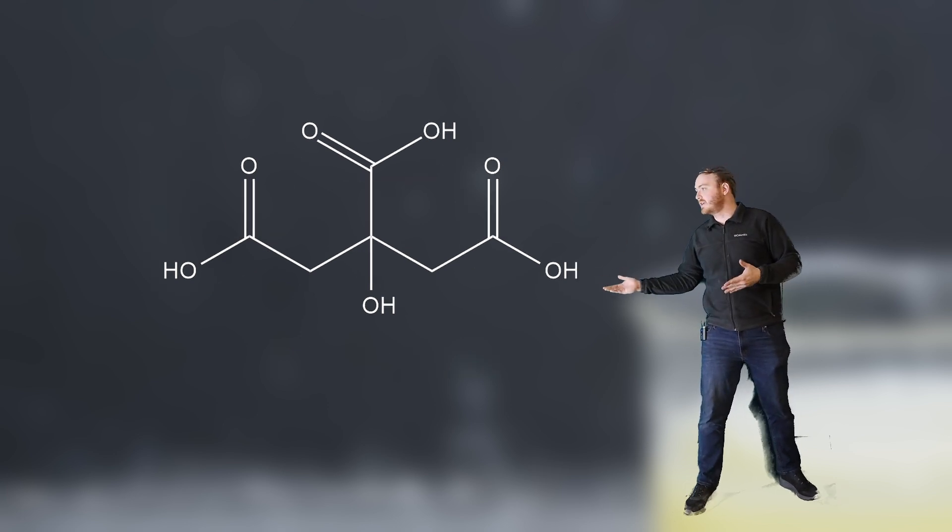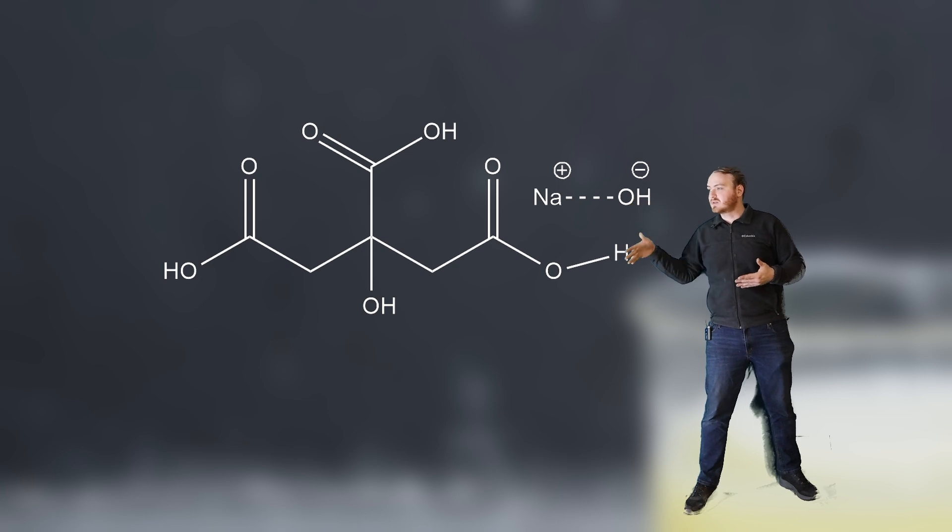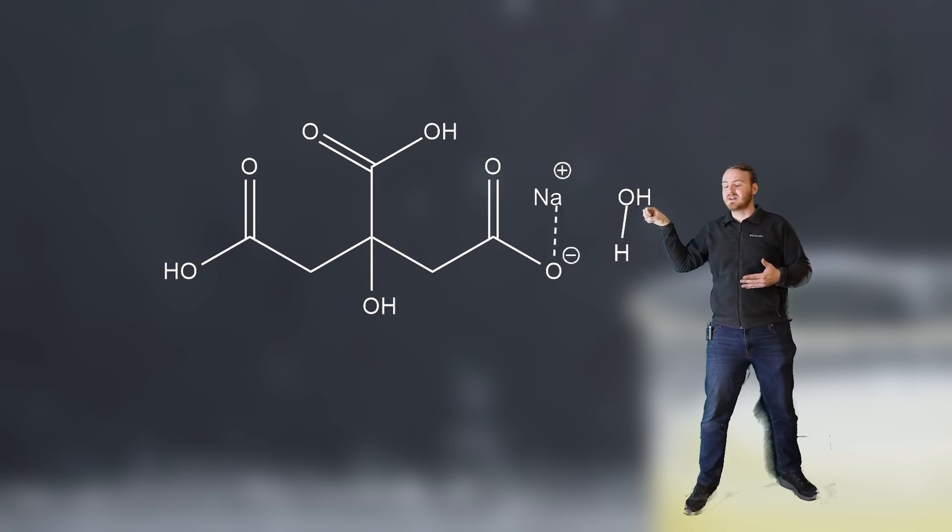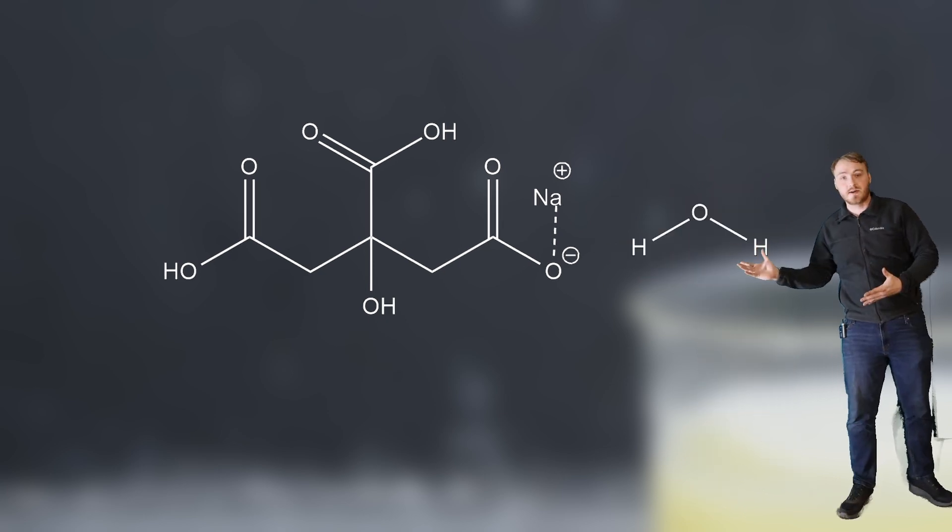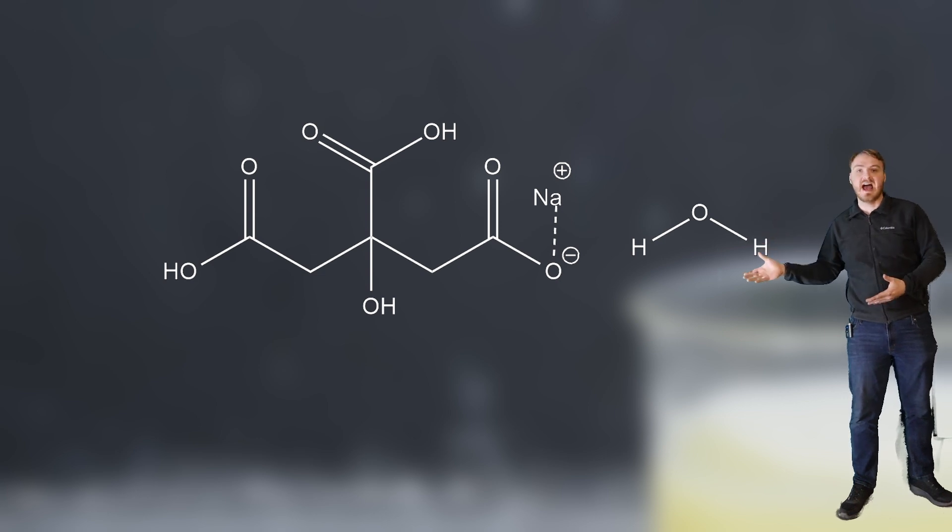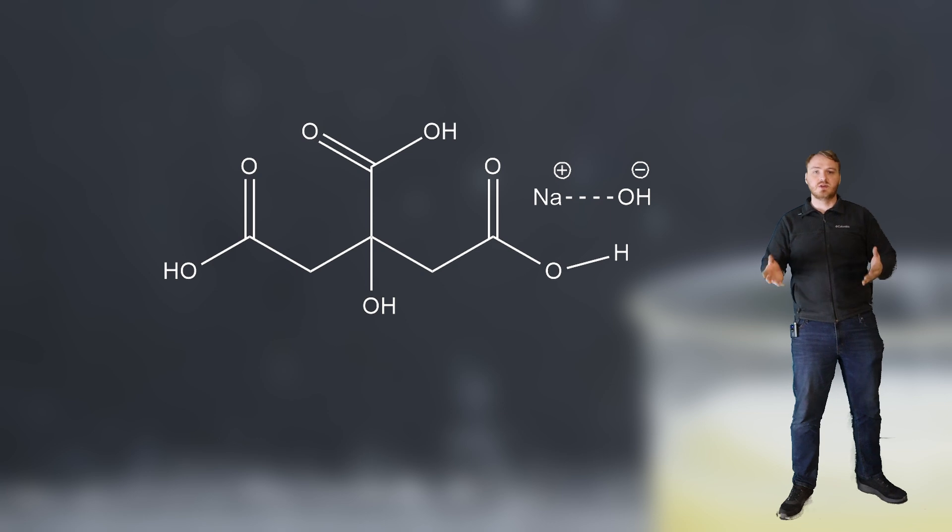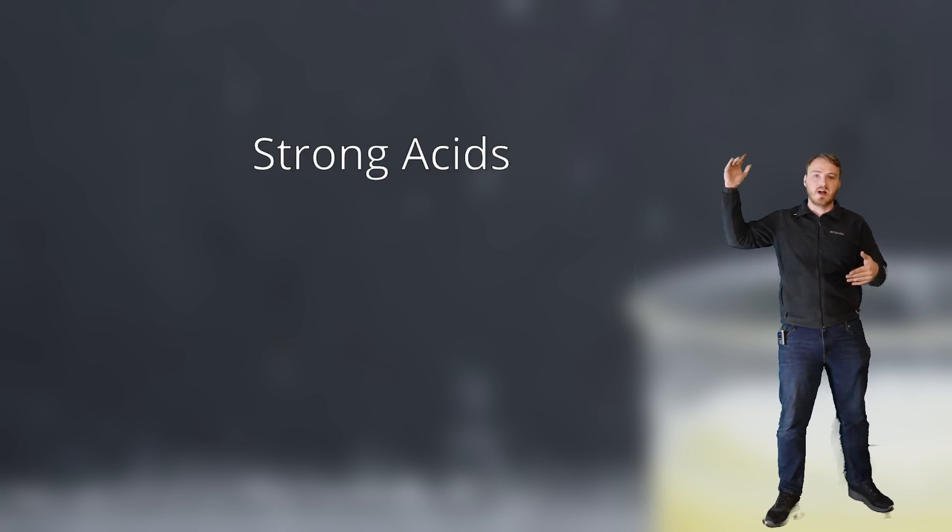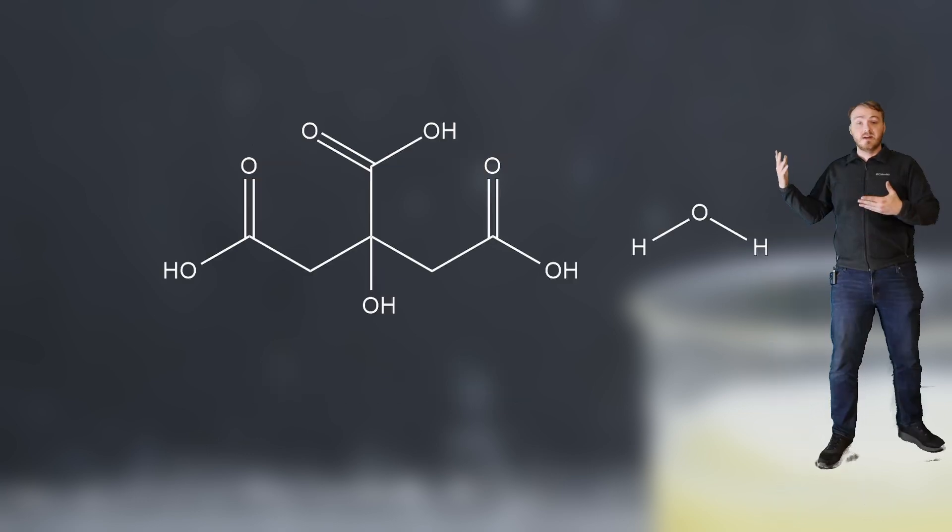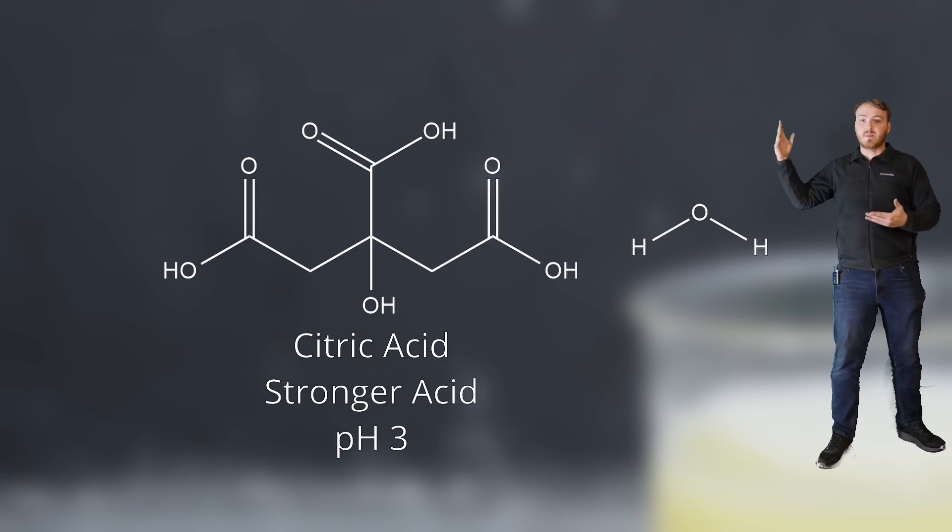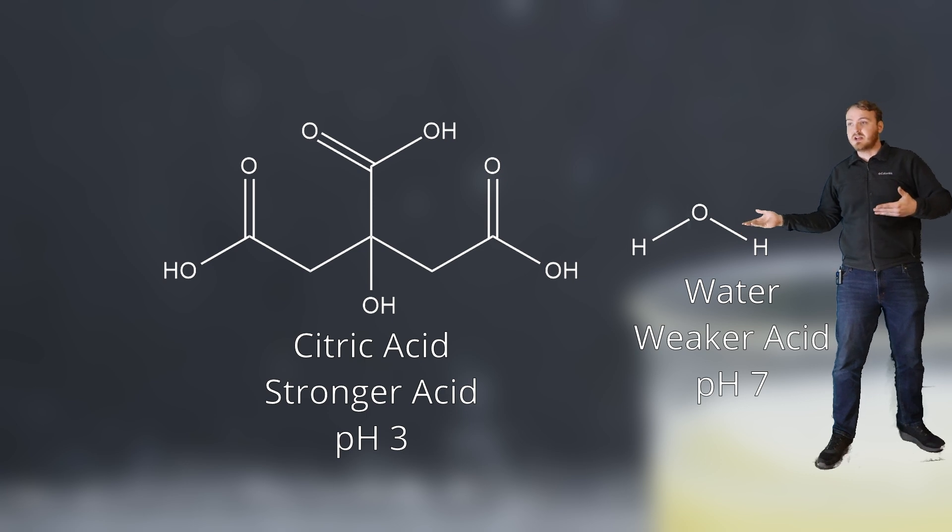When we add the sodium hydroxide, the sodium hydroxide comes in and takes that hydrogen that really wants to come off and replaces it with a sodium ion. This produces water and the sodium ion sticks to the citric acid there. But how do we know that the citric acid is going to trade a hydrogen for a sodium? Basically, one of the fundamental rules of acids is that they want to go from strong acids to weak acids. And if you give them an opportunity, they'll take it. Citric acid has a pH of about three. If we give it an opportunity to give up its hydrogen to water, it becomes a pH of seven.